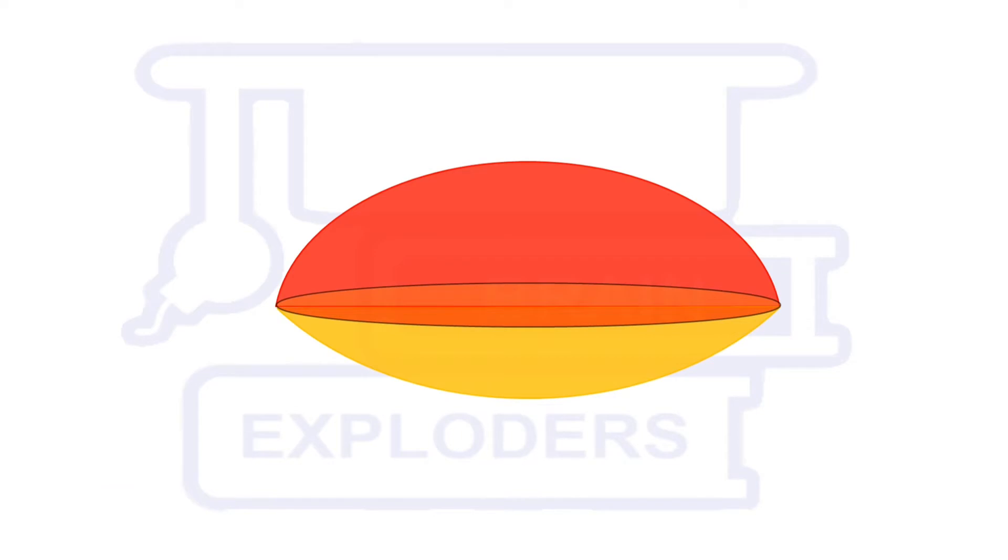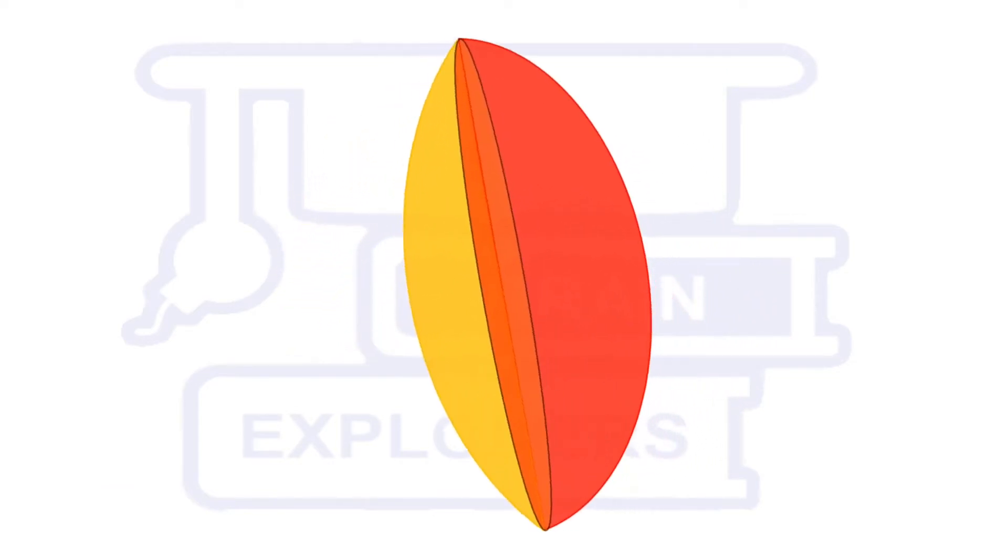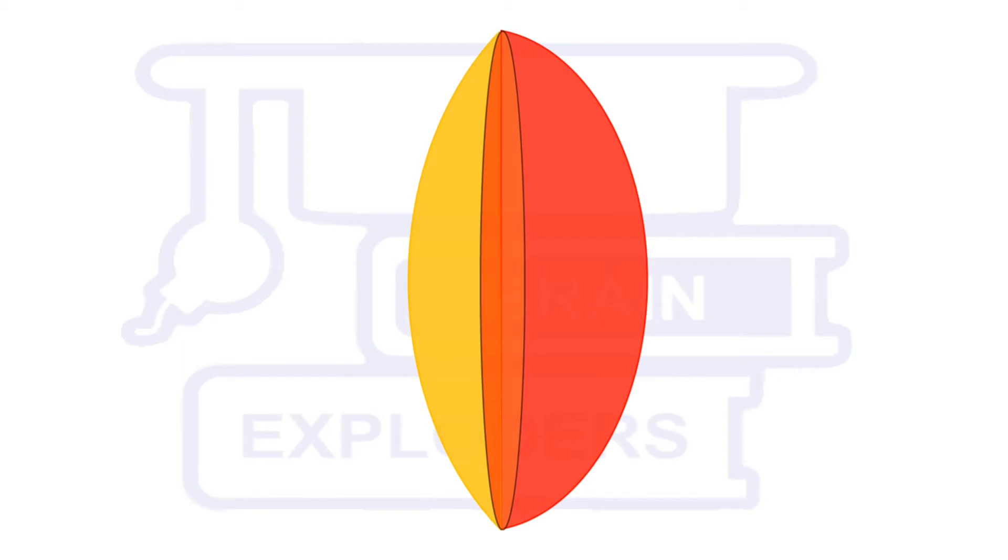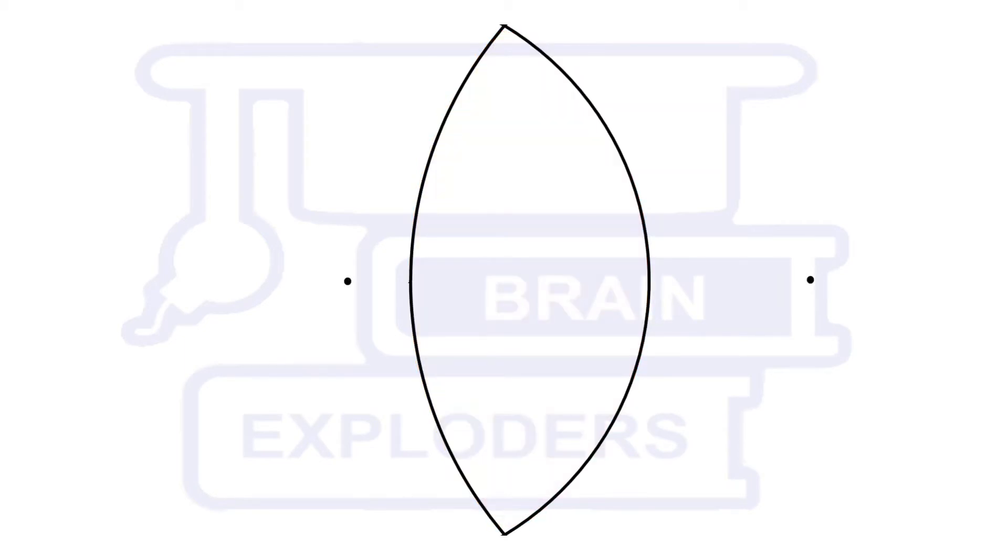So here is the solution. This is the given shape. Rotate it by 90 degrees. Now consider just a two dimensional section of it to calculate the thickness of both the parts separately.